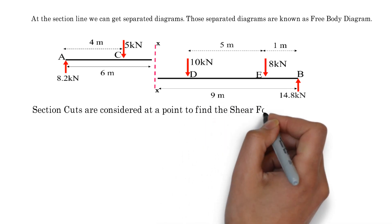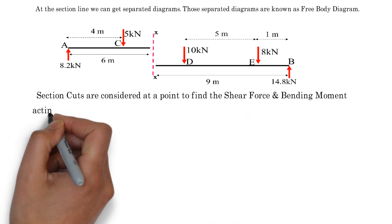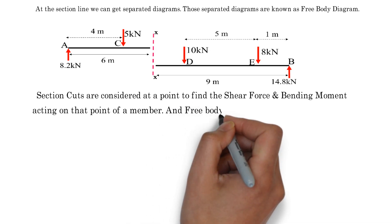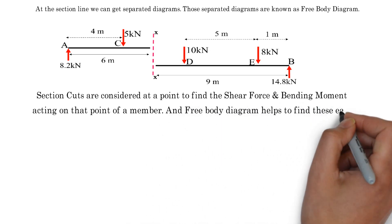Section cuts are considered at a point to find the shear force and bending moment acting on that point of a member. And free body diagram helps to find these easily.